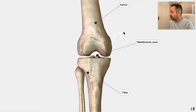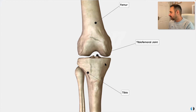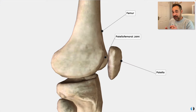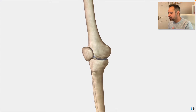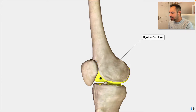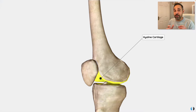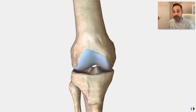The tibiofemoral joint is also split into two: we have the medial tibiofemoral compartment, which is the inside of the knee closest to our midline, and the lateral tibiofemoral compartment. We can also see where the patella or kneecap articulates with the femur to create the patellofemoral joint. All of these different surfaces are lined with a special cartilage called hyaline or articular cartilage — a shiny surface that forms a protective layer over the top of our bones.